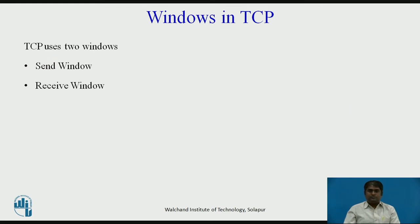TCP uses two windows — send window and receive window — for each direction of data transfer, which means four windows for bidirectional communication. However, to make this session simple, we assume that the communication is only unidirectional, that is from client to the server.